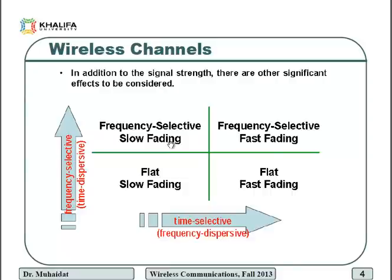Another way to determine frequency selectivity: check if the symbol rate is less than or equal to the coherence bandwidth. If the symbol rate is less than the coherence bandwidth, you have a non-selective — or flat — channel. Flat and non-selective mean the same thing.